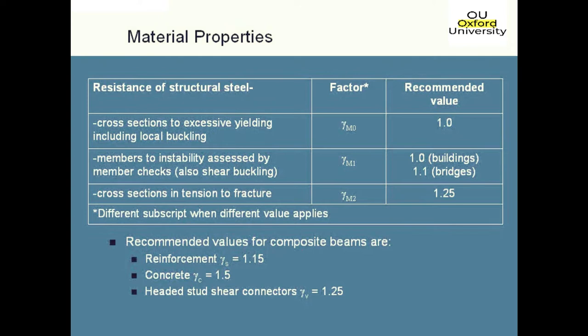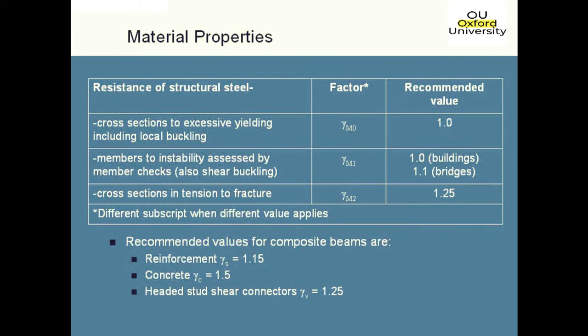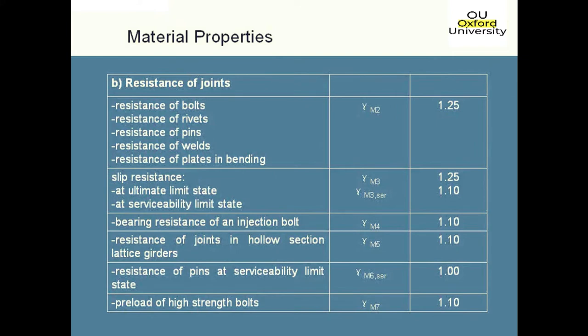The gamma M1 factor relates to resistances of members due to instability and it also applies to shear buckling and things like that. Then you've got the gamma M2 value as well, which just deals with tension. If you're dealing with composite beams, the same gamma factors apply as you had for concrete — 1.15 for steel and 1.5 for the concrete — and if you've got shear connectors, the gamma factor is 1.25.